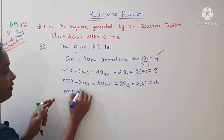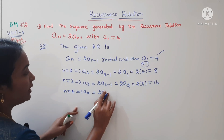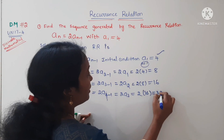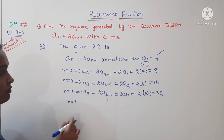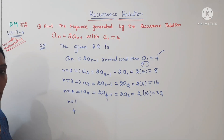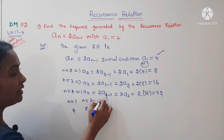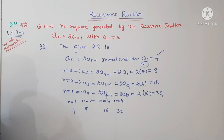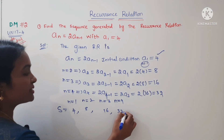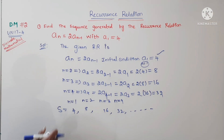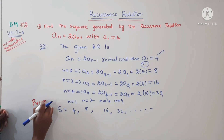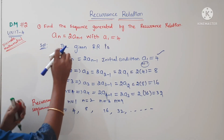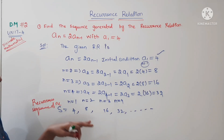Similarly, substituting n = 3: a₃ = 2·a₂ = 2 × 8 = 16. Then n = 4: a₄ = 2·a₃ = 2 × 16 = 32. So the values are: n=1 gives 4, n=2 gives 8, n=3 gives 16, n=4 gives 32, and so on. The recurrence sequence for the given recurrence relation is {4, 8, 16, 32, ...}.